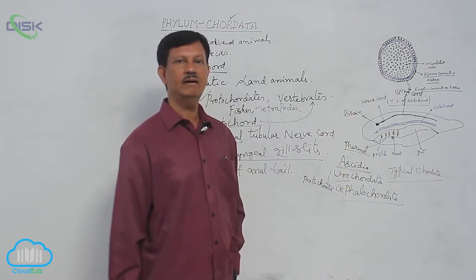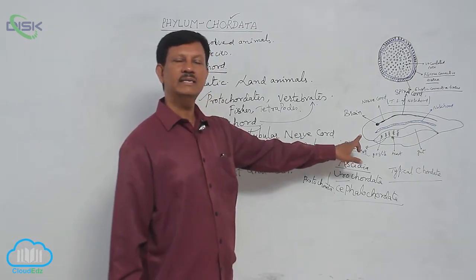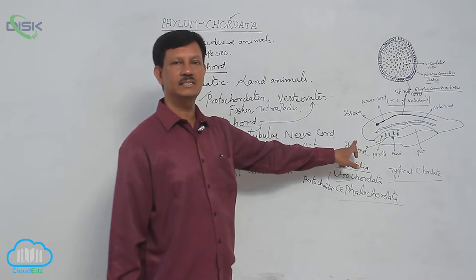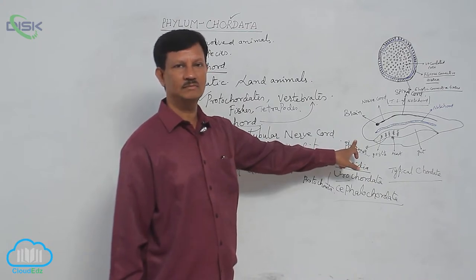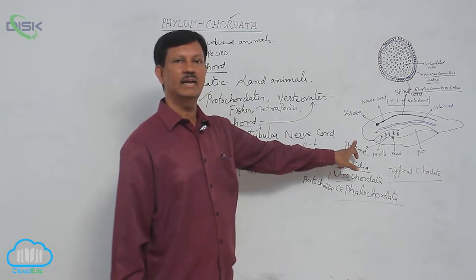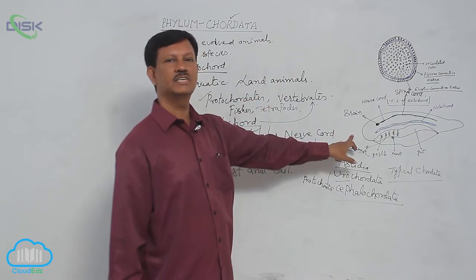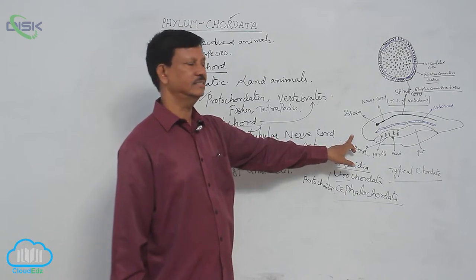In reptilia, aves, and mammals including man, gills are absent. But gills are present in the embryonic condition, non-functional. They are present in early development. That is the characteristic feature of chordata, that is why non-functional gills are present in the embryonic stages.